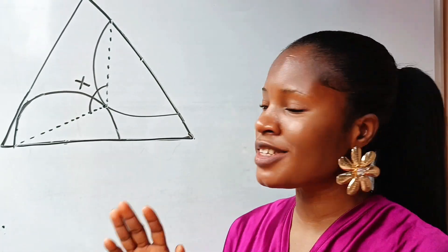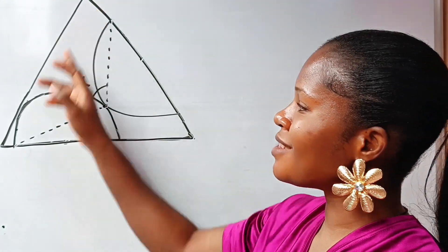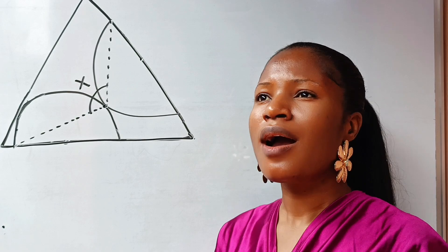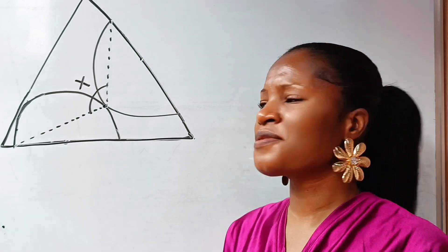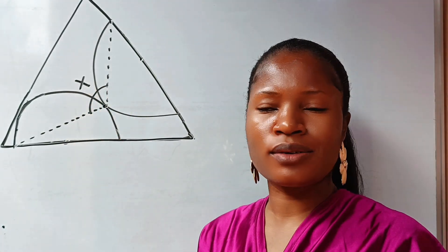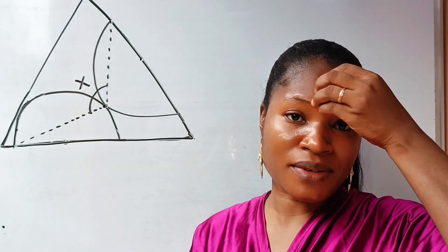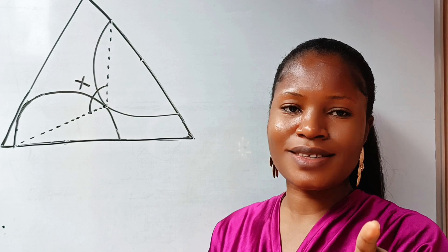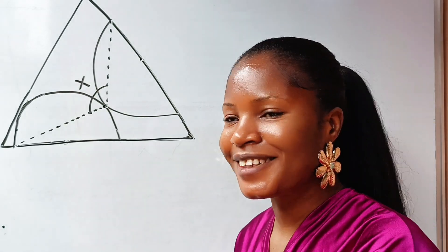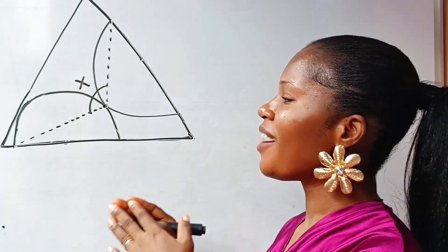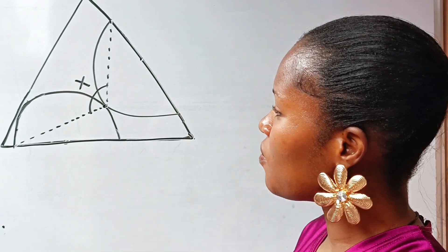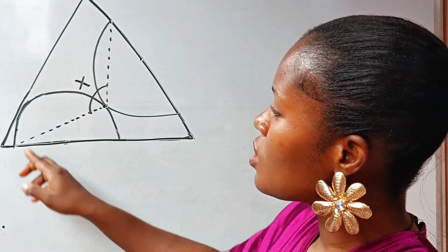The only information given to us here is that this is an equilateral triangle. This is not drawn to scale, and we are asked to find the angle here. How do you go about this? Is this possible? Yes, it is. Welcome back to my channel — we have an amazing and interesting one to solve.